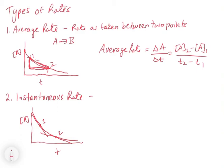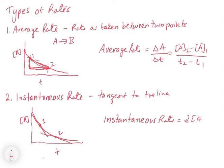So this tangent to the line at those points gives you the instantaneous slope. This is actually where the calculus comes in. The instantaneous rate is equal to d[A]/dt. And this indicates the derivative, or the tangent to the line at those points.